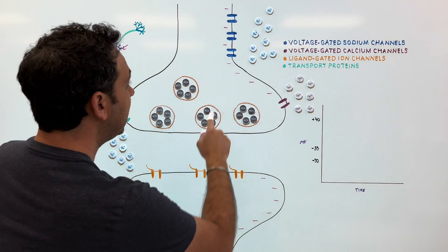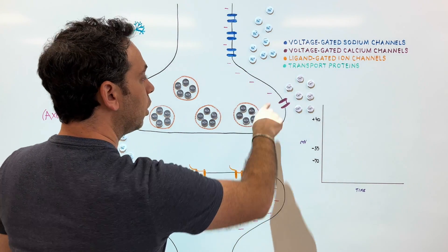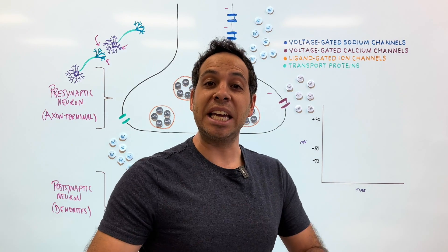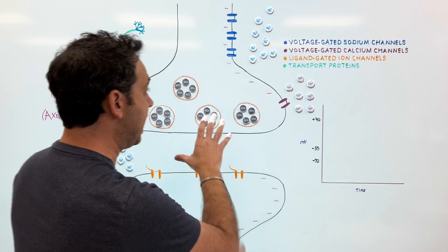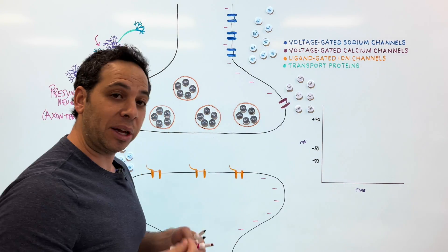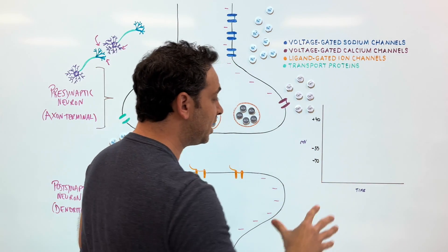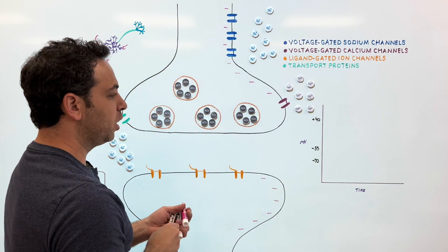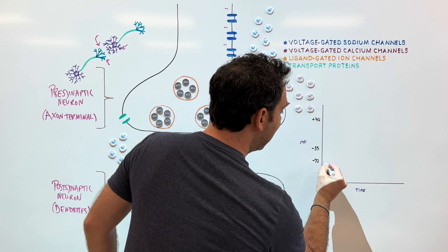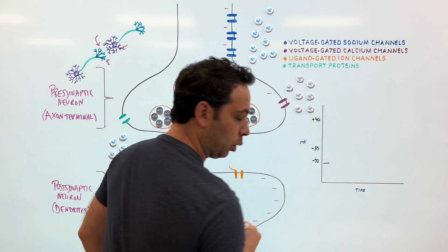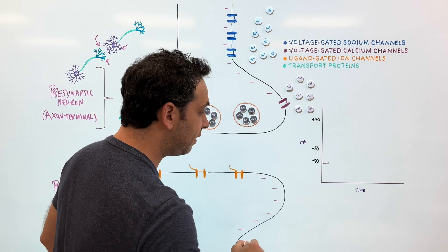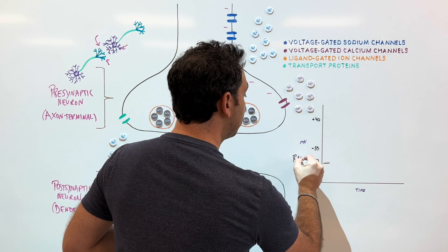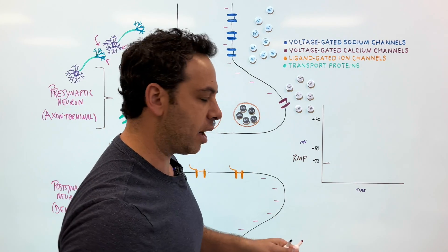Another thing to pay attention to: I have all these little negative lines here. This is the idea that before a neuron fires, it is negatively charged on the inside and positively charged on the outside. We can visualize this on a graph — right now a neuron is at negative 70 millivolts. This is called the resting potential, or resting membrane potential.